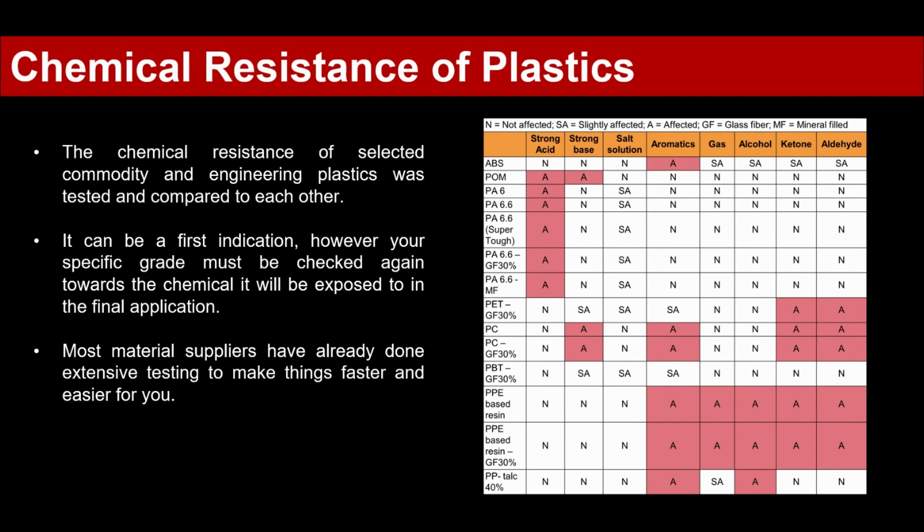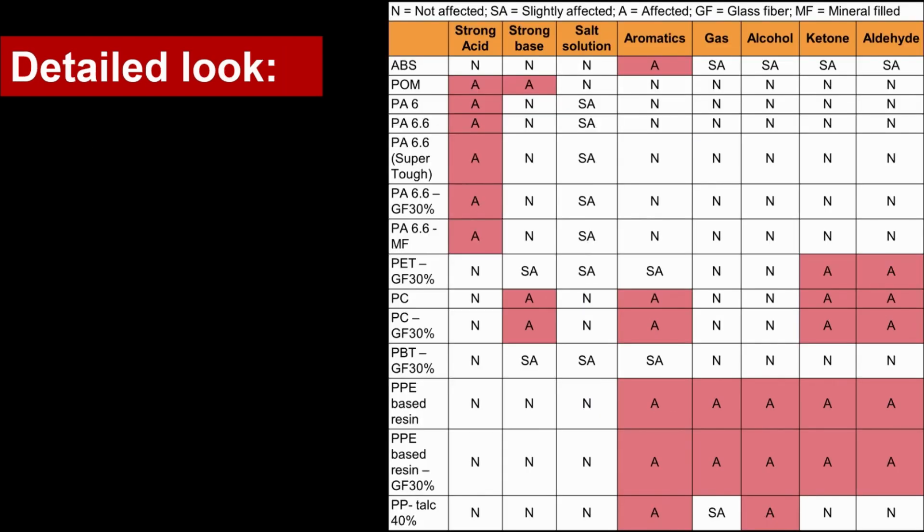However, the specific grade you select also needs to be tested or checked against the chemical it will be exposed to in the final application. The good thing is most material suppliers have already done extensive testing, and you can ask them to provide you the data. I will also link the table in the description below so you can download and use it during material selection.